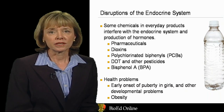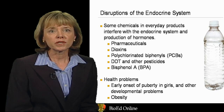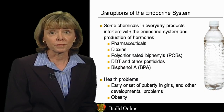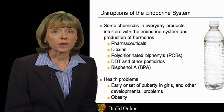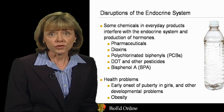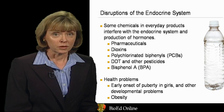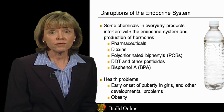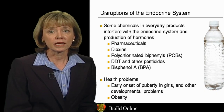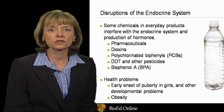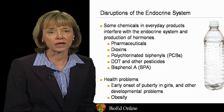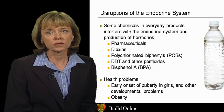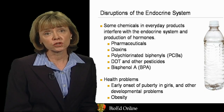Another way in which the environment interacts with human health is by disrupting the endocrine system. The endocrine system produces chemical messengers that regulate many of life's processes, including sexual development, metabolic functions, growth, and the response to stress. Endocrine disruptors are found in everyday products including plastic bottles, metal food cans, detergents, flame retardants, food, toys, cosmetics, and pesticides. Some of these chemicals are so similar to hormones produced by the body that they can occupy the same sites in the body and produce the same responses as naturally occurring hormones. This can cause a variety of health problems, the most noted of which is the early onset of puberty in girls and other developmental problems. It's also believed to be a contributor to obesity.